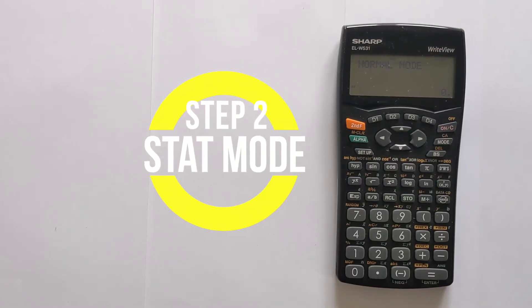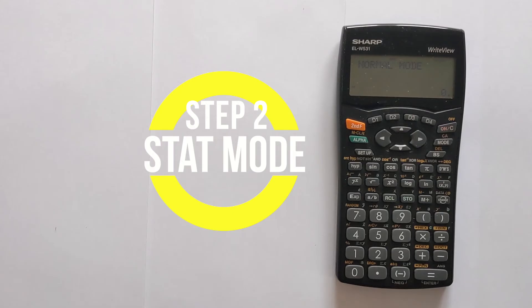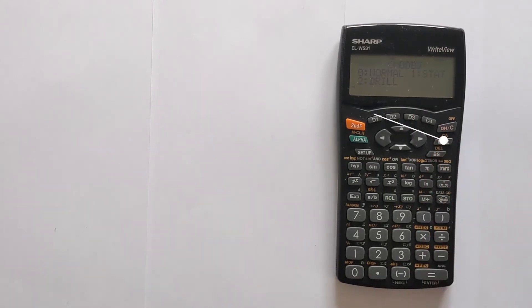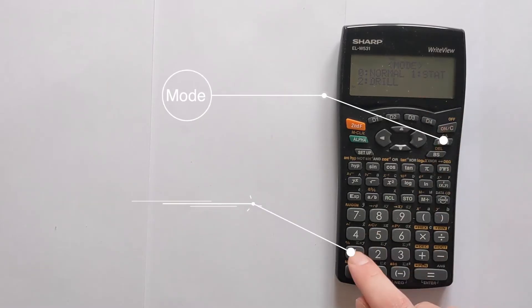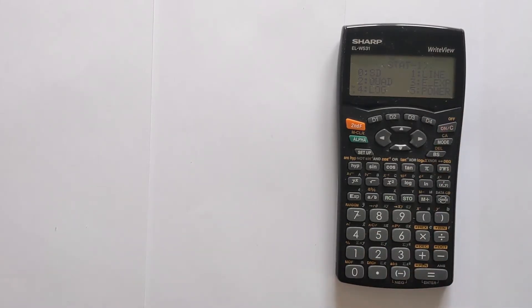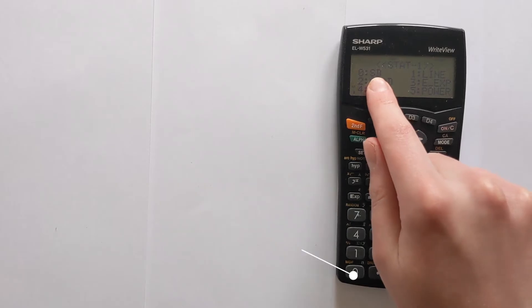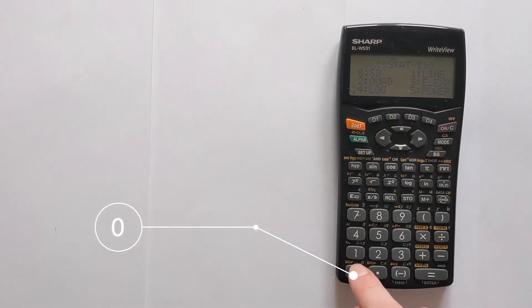The next thing you want to do is change it from normal mode and put it into the correct statistics mode. To do that you press mode and you want to choose option 1 for stat, because we are interested in calculating standard deviations. You want to look at option 0 for SD and we're now in the correct mode.